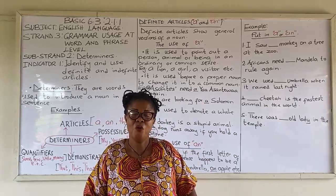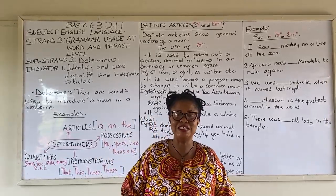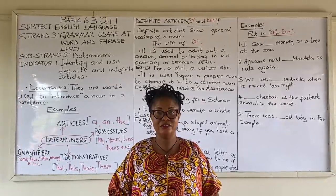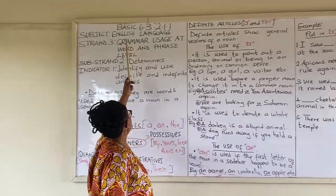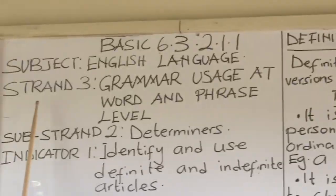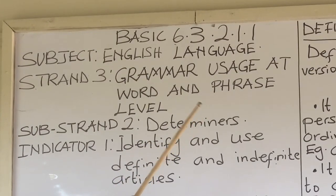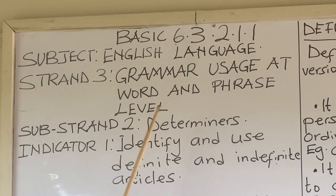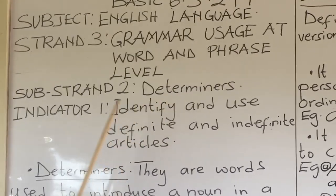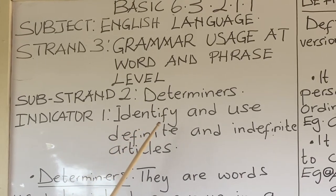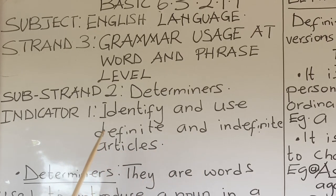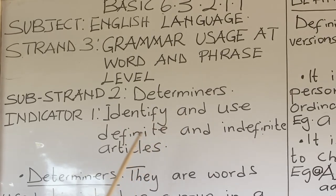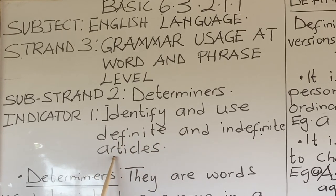Hello! Welcome to Let Us Mouse Basic 6 Online Tutorials. Today's tutorial is on English language, taking from Strand 3: Grammar usage at word and phrase level, Substance 2 — Determiners, Indicator 1. You are to identify and use definite and indefinite articles.